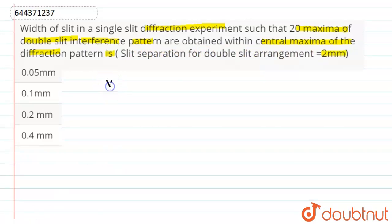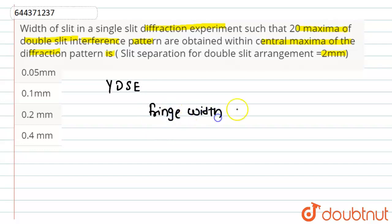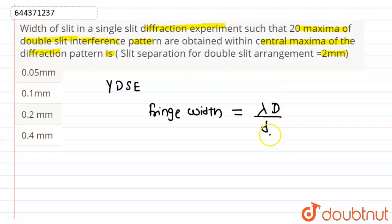We know that in YDSE, that is Young's double slit experiment, the value of fringe width is calculated by the formula lambda capital D divided by small d, where lambda is the wavelength of light, capital D is the distance between the slit and the screen, and small d is the separation between the two slits.